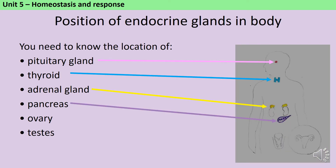There are six named examples of endocrine glands in the GCSE Biology specification, and you should be able to identify where in the body each of these is by labelling a diagram. The pituitary gland is in the brain — it sits just behind the bridge of the nose, next to the hypothalamus. Your thyroid gland is in your neck, below your Adam's apple, just next to your trachea or windpipe.